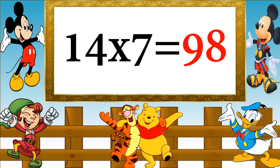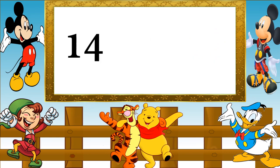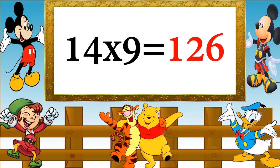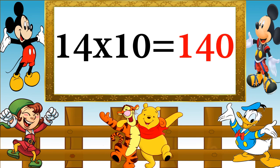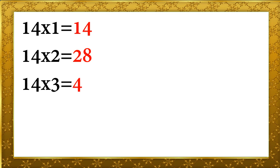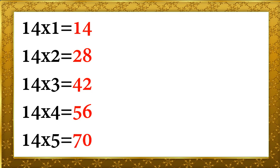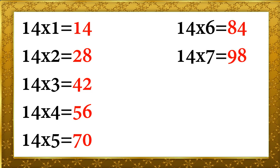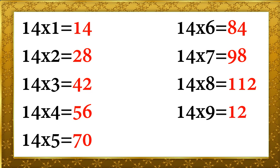Table of 14. Fourteen sevens are ninety-eight, fourteen eights are one hundred twelve, fourteen nines are one hundred twenty-six, fourteen tens are one hundred forty. Fourteen ones are fourteen, fourteen twos are twenty-eight, fourteen threes are forty-two, fourteen fours are fifty-six, fourteen fives are seventy, fourteen sixes are eighty-four, fourteen sevens are ninety-eight, fourteen eights are one hundred twelve, fourteen nines are one hundred twenty-six, fourteen tens are one hundred forty.